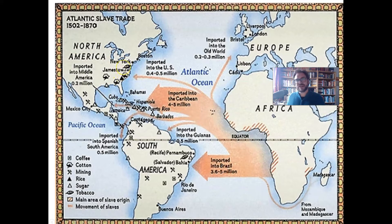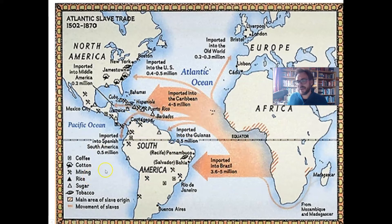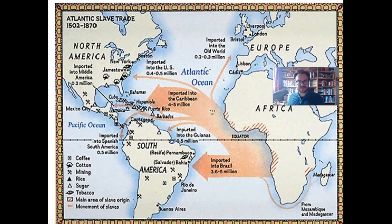It was cotton fields, tobacco fields — conditions that, while terrible, allowed enslaved people to survive, have children, and build next generations, becoming African Americans in this way. In the Caribbean and South America, conditions were so deadly that they had to continuously bring more people in — four, five, ten million or more arriving as first-generation enslaved people throughout the entire duration of the Middle Passage and beyond.